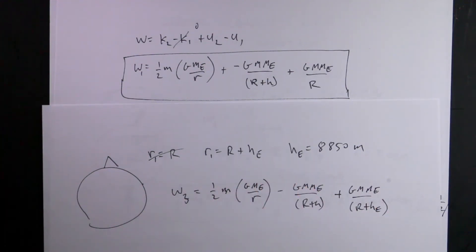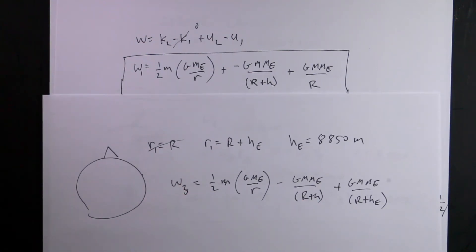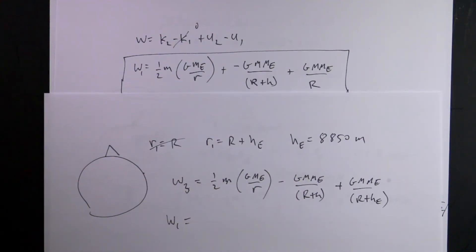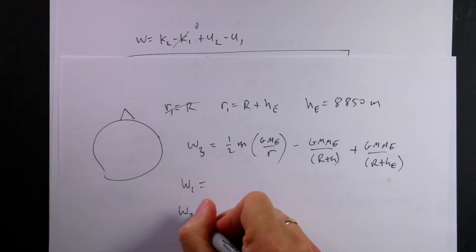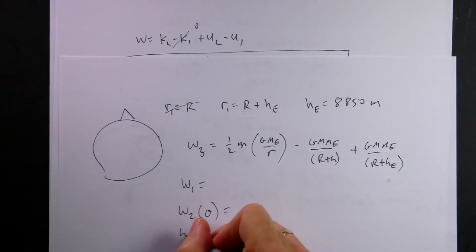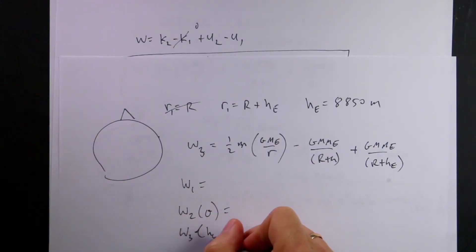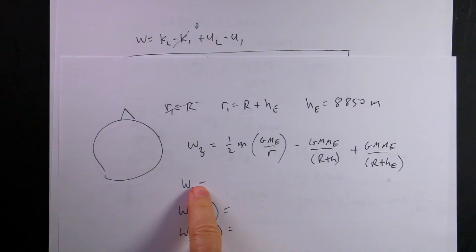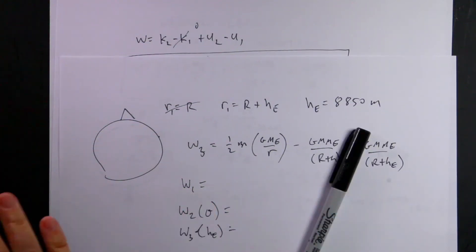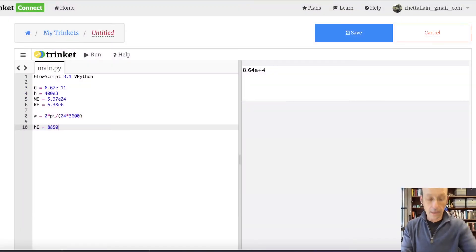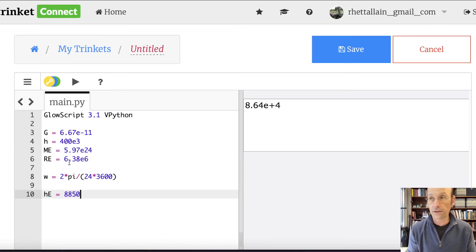Okay, so let's calculate all these things. I don't want to do this with a calculator — I want to do this in Python so we can also make plots. I want to calculate W1 as the standard baseline, plot W2 as a function of theta, and plot W3 as a function of H_E. So we're going to make two graphs. Let's jump over to Python and calculate all this stuff. Here I am in GlowScript VPython — I put some constants in there already.